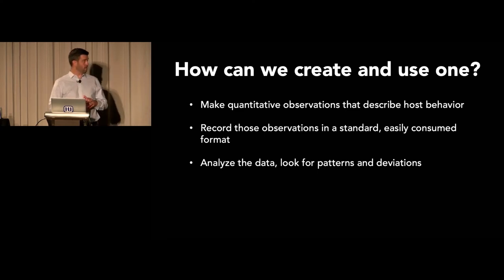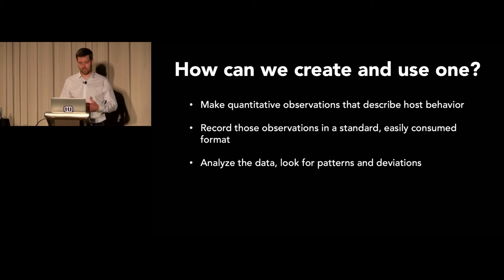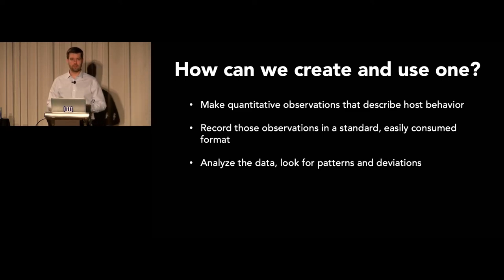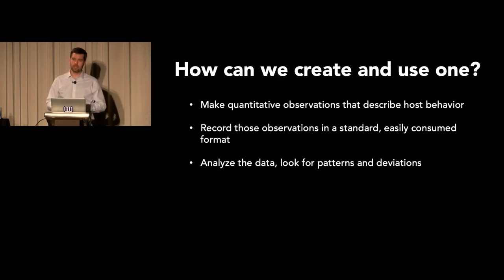My theory on how you can go about creating a baseline starts out with making quantitative observations that describe network host behavior, host interactions, protocol usage, things like that. You need to record those observations in a standard format — thankfully Zeek makes that very easy and straightforward. And then once you have that log stream, you just need to analyze the data, look for patterns. You can analyze the data manually, visually, and even statistically. You want to look for patterns and then try to spot deviations, and that can help you form an understanding of what normal looks like and how to spot abnormal.